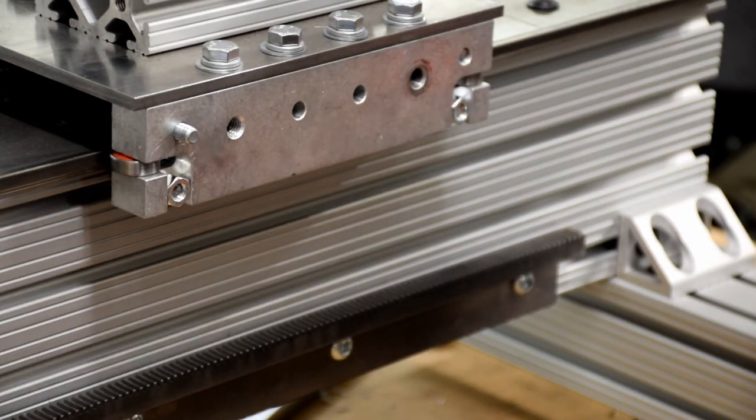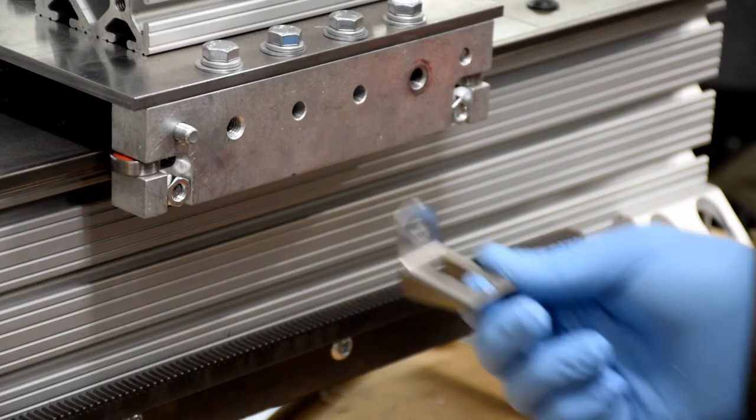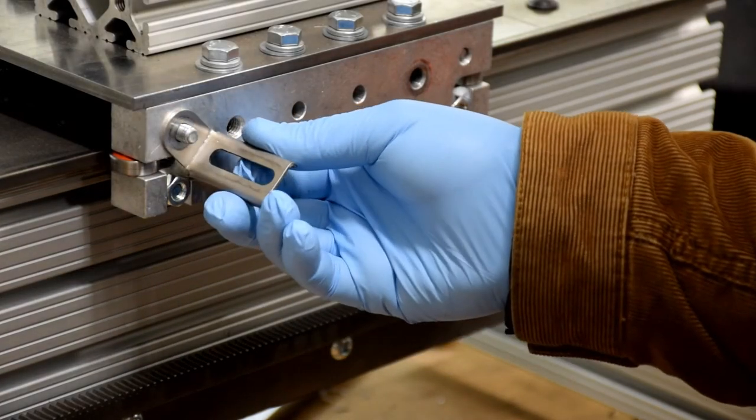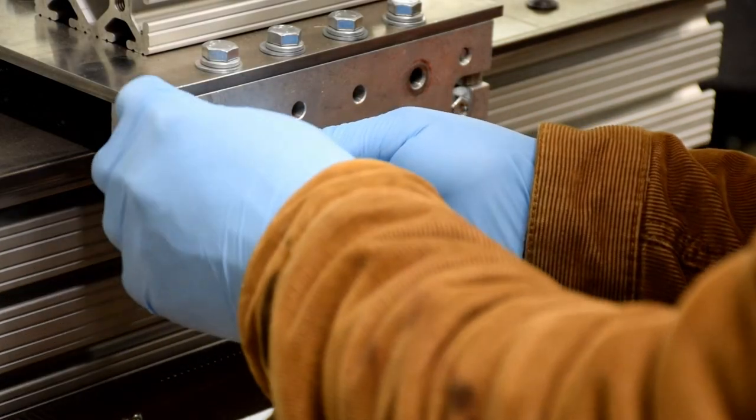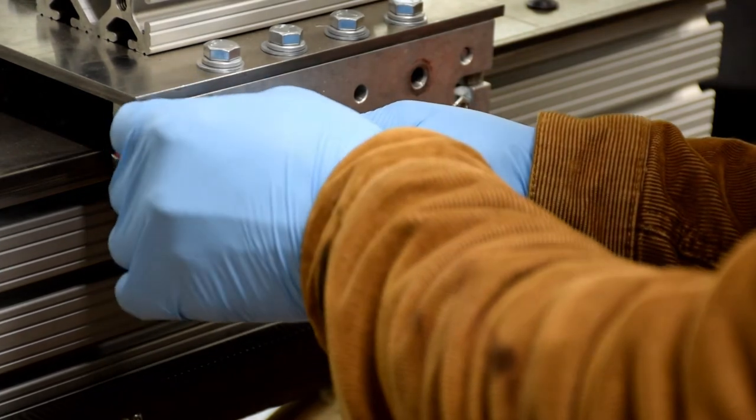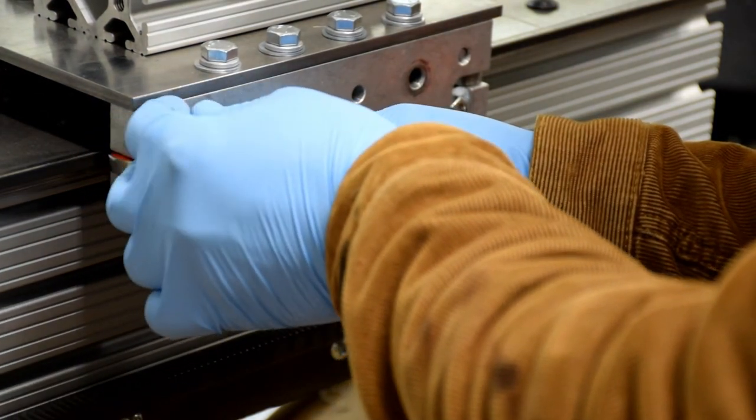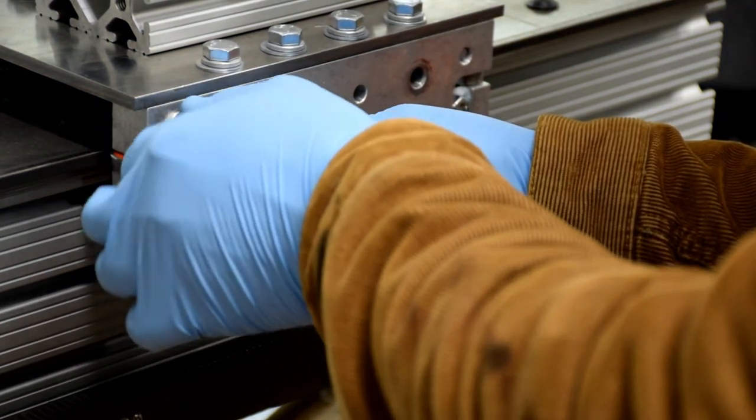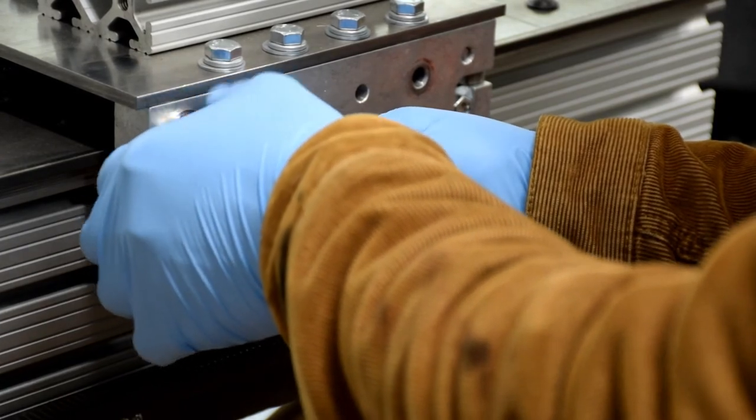We're going to spring load the apron to provide positive pressure for the pinion gear against the rack. So we're going to install this long bracket with the nut that comes with the CNC router parts pack. Just get it finger tight for right now.